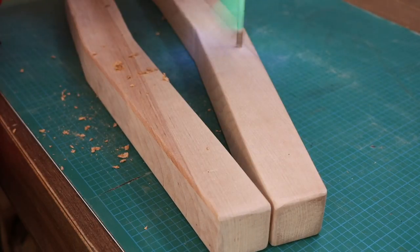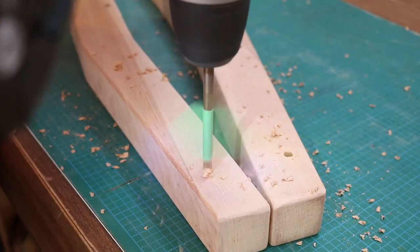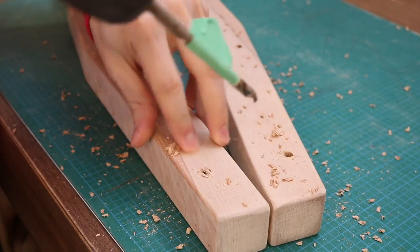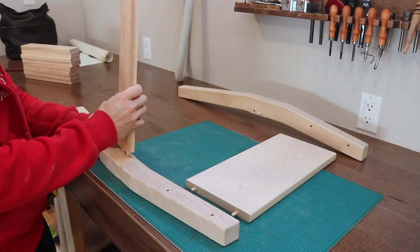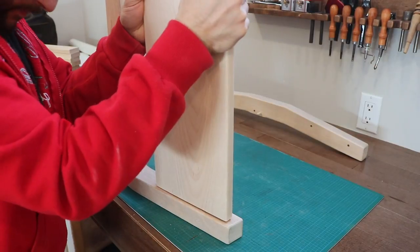I repeated the same process for the back legs. I marked and drilled the dowel holes into the back legs, rail and backrest, dry fit everything together, then glued it up.